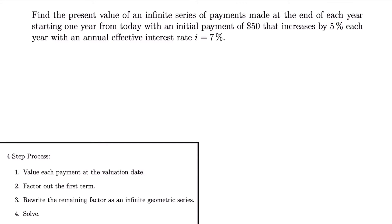When we calculated geometric annuities, we had a four-step process, and we're going to use a very similar four-step process to find the present value of a geometric perpetuity. Consider that we want to find the present value of an infinite series of payments made at the end of each year, starting one year from today — a perpetuity immediate — with an initial payment of $50 that increases by 5% each year, with an annual effective interest rate of i = 7%. This is a geometric perpetuity because each payment increases by a certain percent, not a set amount.